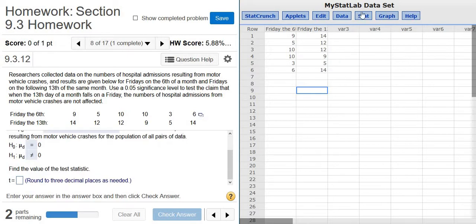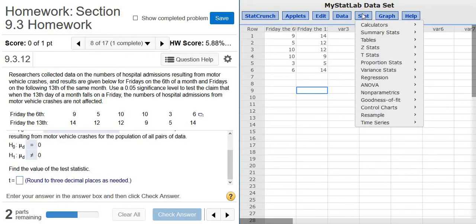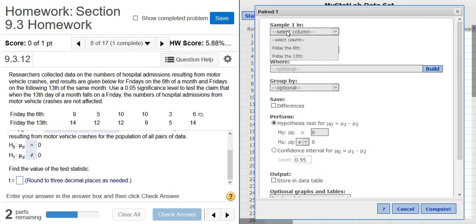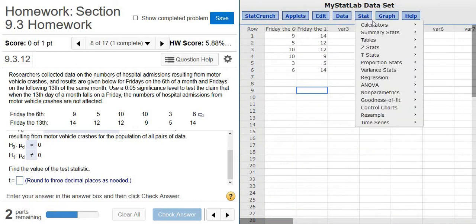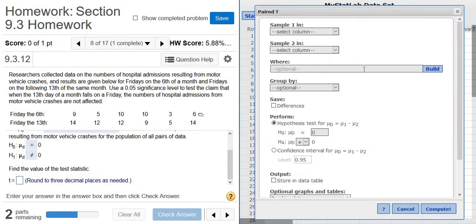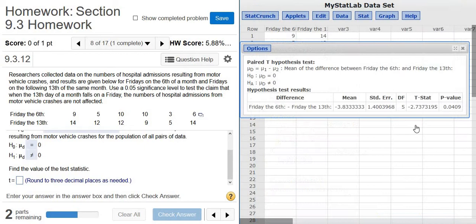Find the value of the test statistic. So then we just go to Stat, and it's t and paired. Stat t paired. And then we just pick the first thing, pick the second thing. And then everything here, it's already not equal to, so we leave it. Click Compute.